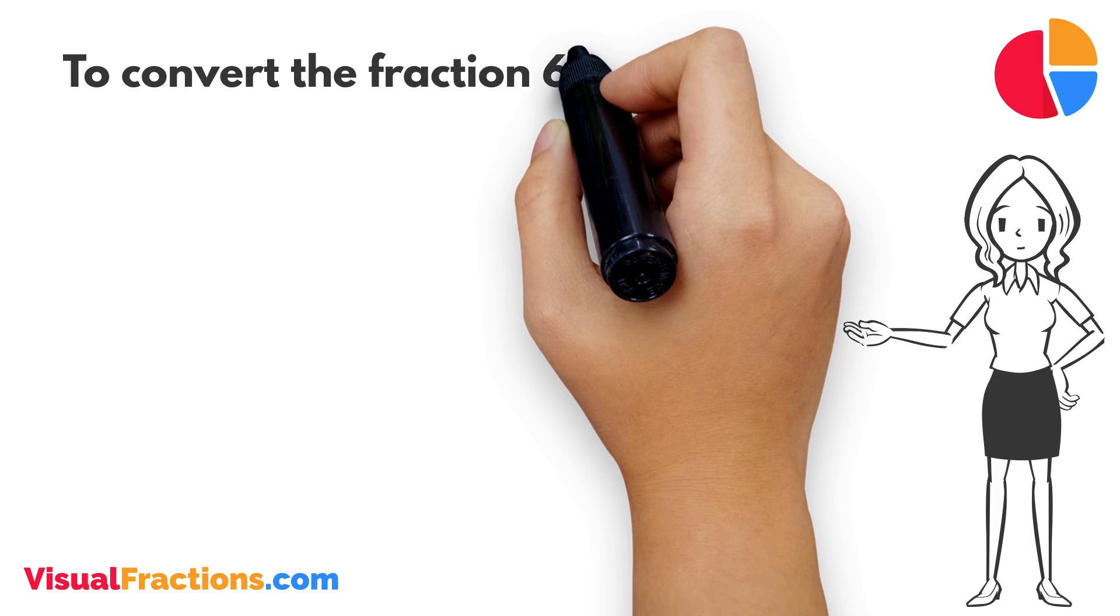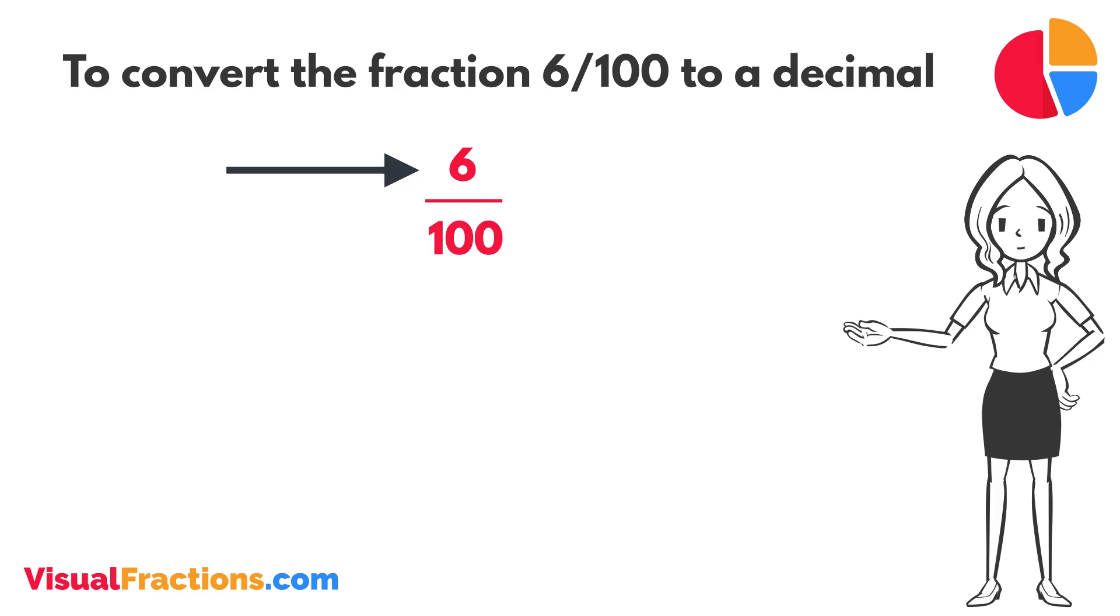To convert the fraction 6/100 to a decimal, all we need to do is divide the numerator, the top number, by the denominator, the bottom number.